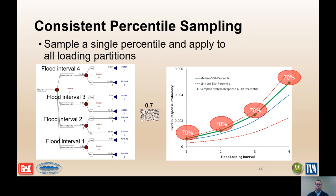This can be done in commercial software by setting up correlated sampling. Another alternative would be to fit an analytical distribution to the system response curve. The parameters of the distribution could be sampled to generate sample system response curves, and the system response probabilities could then be interpolated from the sampled curve. The advantage of this approach is that it is more accurate than the consistent percentile method. The disadvantage is that accuracy depends on how well the curve fits an analytical distribution.